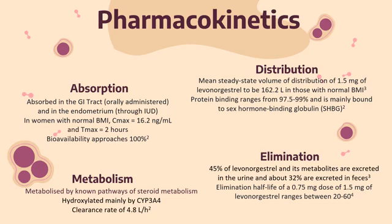Another pharmacokinetic study determined a mean steady-state volume of distribution of 1.5 mg of levonorgestrel to be 162.2 liters in women with normal BMI. The protein binding of levonorgestrel ranges from 97.5 to 99%, and it is mainly bound to sex hormone binding globulin. Levonorgestrel is also bound to albumin, but to a lesser extent.